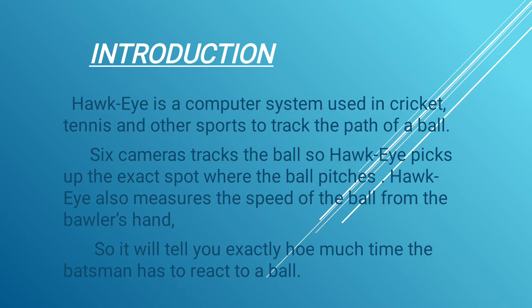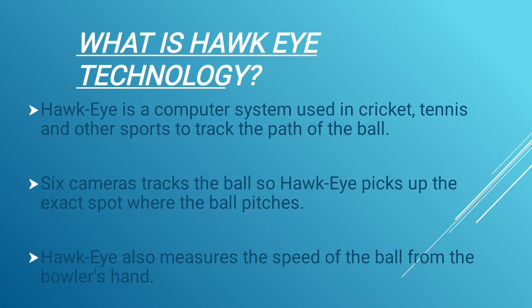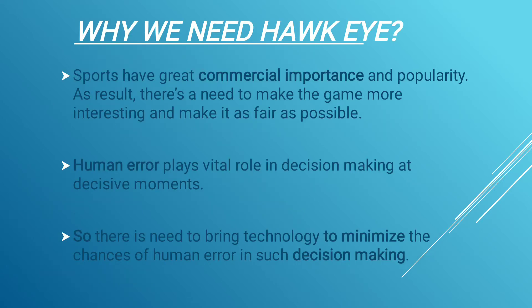Hawkeye is a computer system used in cricket, tennis, and other sports to track the path of the ball. It is also used in automobiles and military applications, but generally it is used in cricket. Hawkeye is a technology that makes fewer errors than humans, which is one of the reasons why we need it.